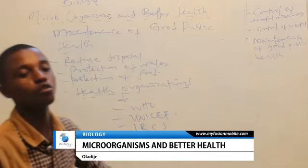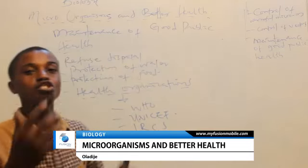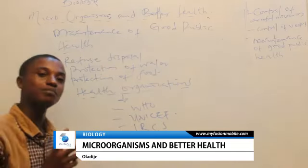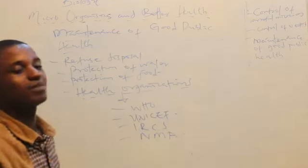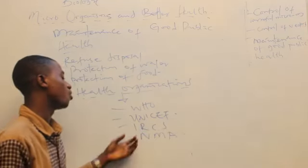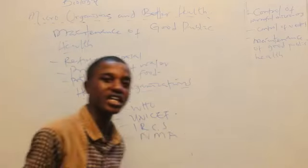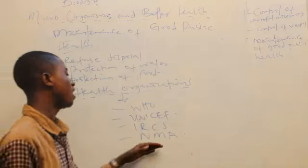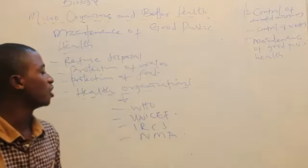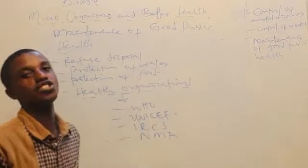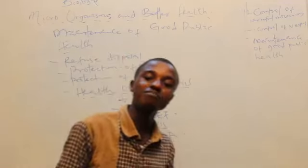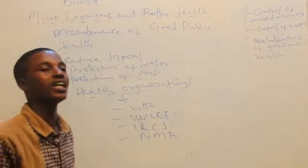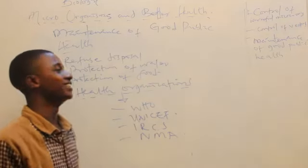We have UNICEF - United Nations Children Education Front. This also helps to combat diseases. They have been training children, they have been giving them informative knowledge that would help them become a better person so as to make the environment a conducive place. We also have the International Red Cross Society. These ones are always on standby against any emergency and they help better healthcare. We have NMA on the local level - Nigeria Medical Association. These are actually boards that meet periodically to talk on how they can make this country a well-developed nation.